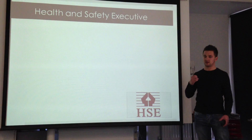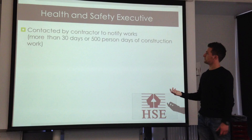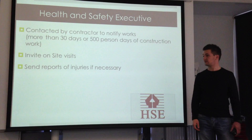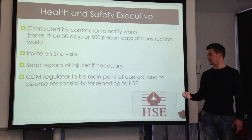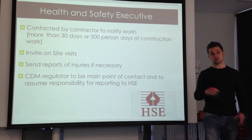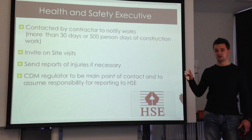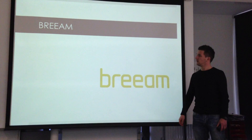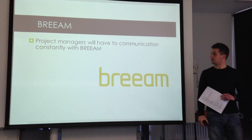The Health and Safety Executive needs to be communicated with in a way that mitigates risk. The contractor contacts them in the initial instance to notify them of the works. You can invite them on site visits and send reports of injuries if necessary. The CDM regulator should be the main point of contact — appointing one takes the pressure off and makes them responsible for reporting to the HSE and enforcing the CDM regulations, so they take on the risk.